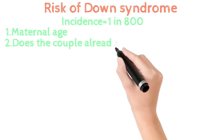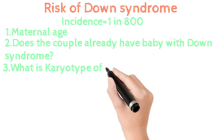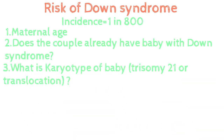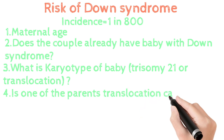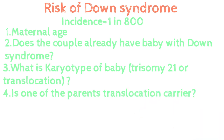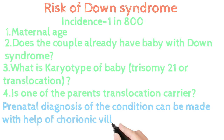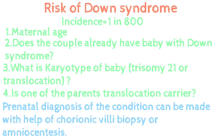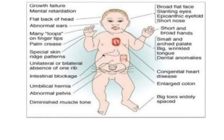Other risk factors include whether the couple already has a Down syndrome baby, the karyotype of the baby — Trisomy 21 or translocation — and whether any parent is a translocation carrier. Prenatal diagnosis can be done with the help of chorionic villi biopsy or amniocentesis. Have a glance at the clinical features of the Down syndrome baby.